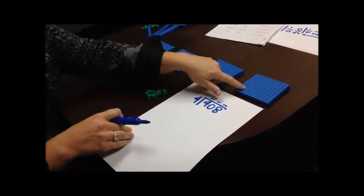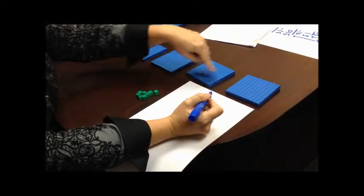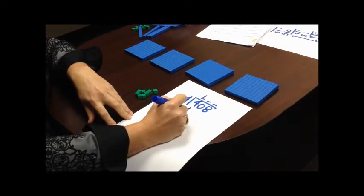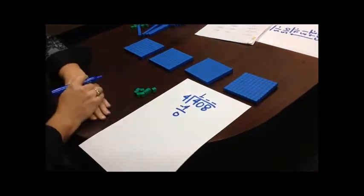When I make my groups, I have 100 in each group. 1, 1, 1, 1. Or 1 times 4 is 4. When I subtract, I don't have any 100s left.